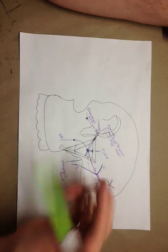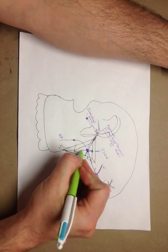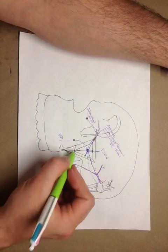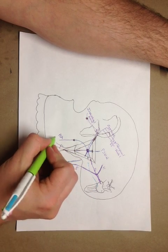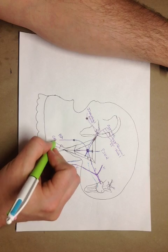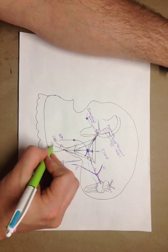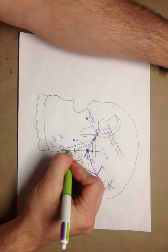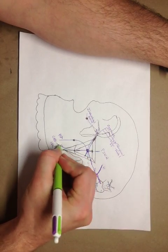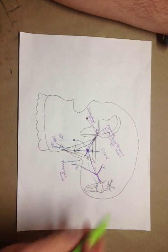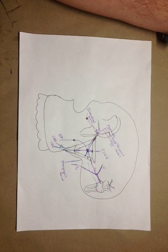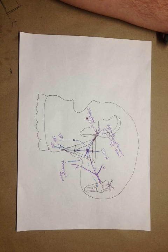We also need to come down here. You've got the descending or greater palatine nerves, and these branch into the greater palatine nerve and the lesser palatine nerves. You're also going to have the autonomics coming down these as well, plus the descending or greater palatine artery coming down there.